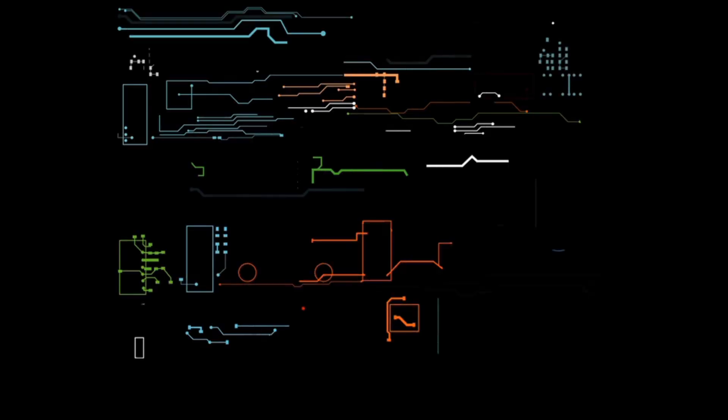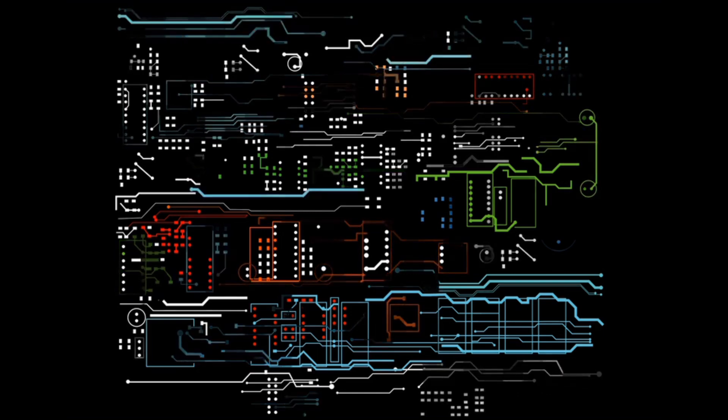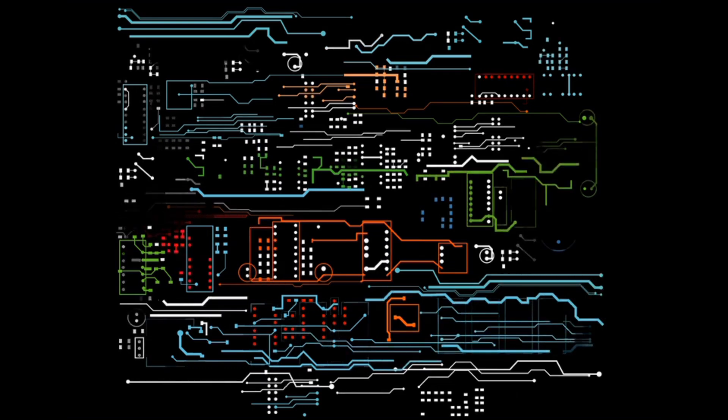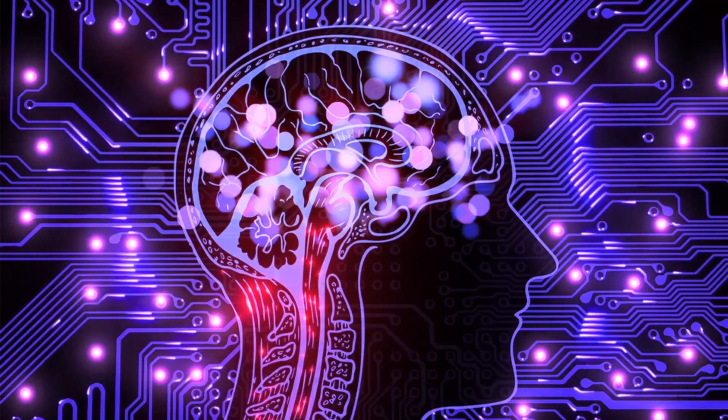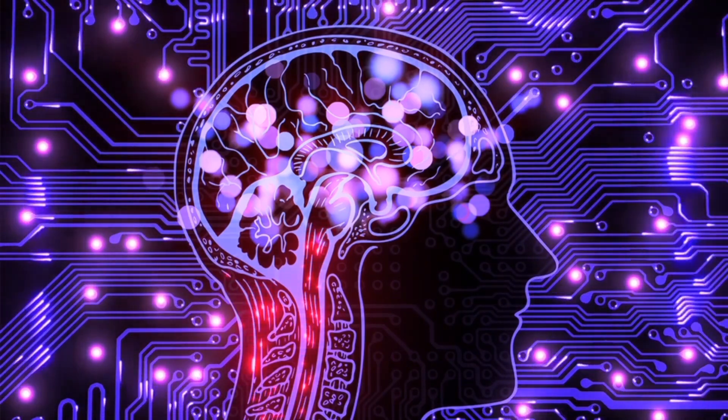ICs combined multiple transistors, resistors, and capacitors on a single silicon chip, enabling unprecedented levels of miniaturization and functionality. One single chip nowadays can hold more than billions of transistors.